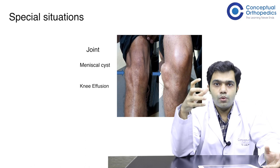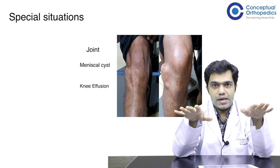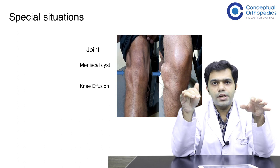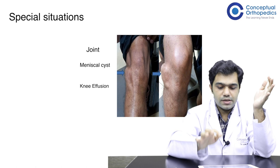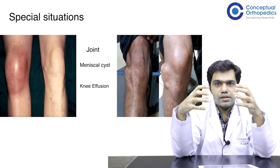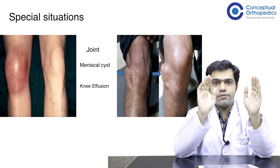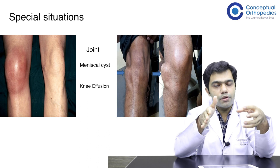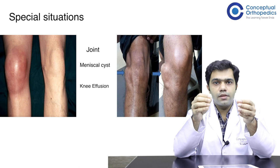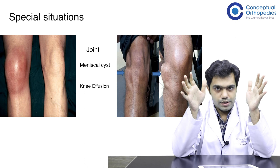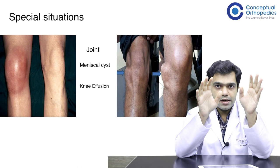In the case of a knee effusion, when there is a massive effusion the synovial fluid collected inside the joint can go anywhere there is space. In an extended or relaxed position — around 20 to 30 degrees of flexion — the entire swelling will be visible from the anterior aspect. When the effusion is smaller and only evident in the parapatellar region, you can demonstrate fluctuation: pressing on one side causes more fluid to go to the other side. Fluctuation is best demonstrated with a mild to moderate effusion.